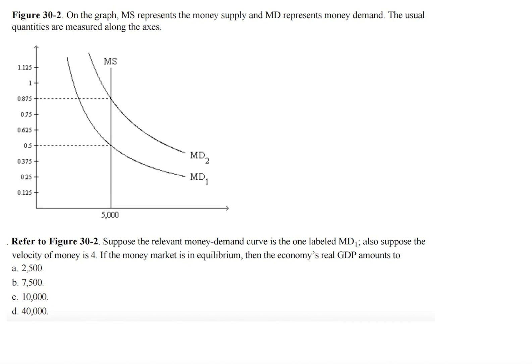So the question asks, suppose the relevant money demand curve is the one labeled MD sub 1. Also suppose the velocity of money is 4. If the money market is in equilibrium, then the economy's real GDP amounts to... Now you might be tempted right off the bat to go ahead and plug in the values,